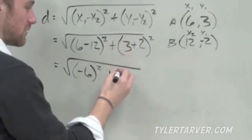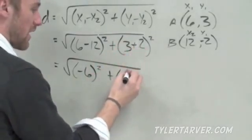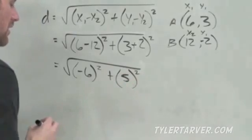So we keep going. 6 minus 12 is negative 6, still squared, plus 3 plus 2 is 5 squared.